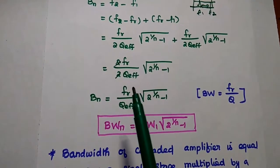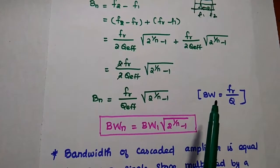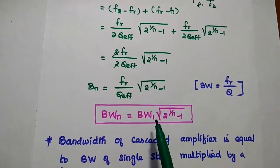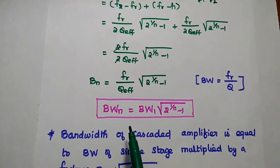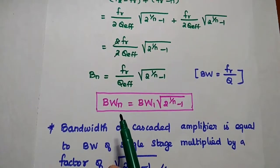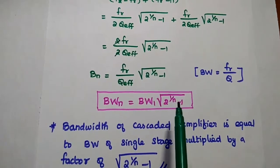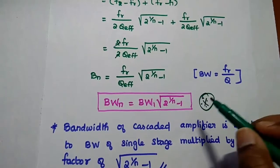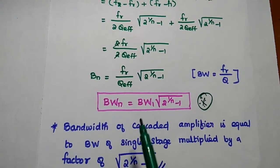Since the resonant frequency divided by the quality factor equals the bandwidth for a single-tuned amplifier, this term can be written as BW_1. Finally, the bandwidth for an n-stage cascaded single-tuned amplifier is BW_n equals BW_1 times √(2^(1/n) minus 1). This is the effect of cascading single-tuned amplifiers on bandwidth.